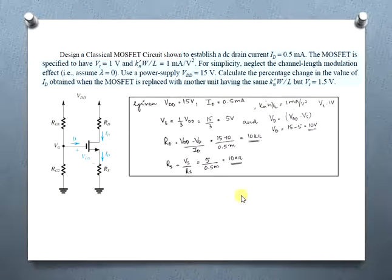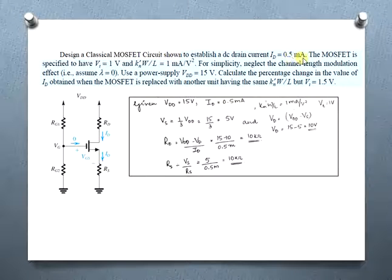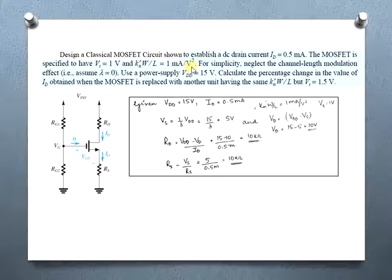The first numerical says we need to design a classical biasing MOSFET circuit to establish a DC drain current of ID = 0.5 mA. The MOSFET is specified to have a threshold voltage of 1 V, and KN' · (W/L) = 1 mA/V². These parameters were covered in an earlier introductory MOSFET tutorial, so please refer to that for context.